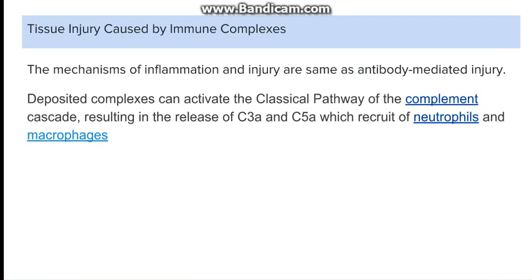The tissue injury caused by the immune complexes is almost similar to what we saw in the case of type 2 hypersensitivity reaction. The tissue injury is mainly caused by complement system activation, which leads to release of various chemotactic agents which recruit neutrophils and macrophages, which further lead to injury because of phagocytosis. There is also release of various enzymes which causes the injury. Watch the video on type 2 hypersensitivity reaction for detailed explanation.